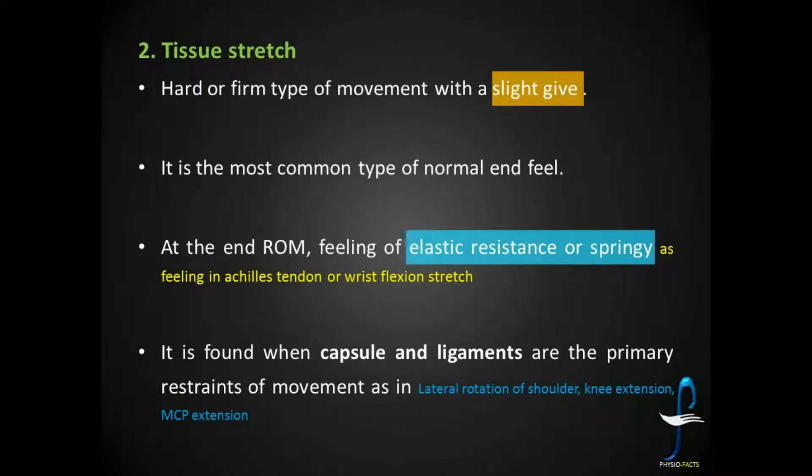The second normal end feel is tissue stretch. Hard or firm type of movement with a slight give. This is one key point here. For the passive range of motion at the end range, there will be a slight give, meaning little motion can be attained by applying lip over pressure at the end range of motion.